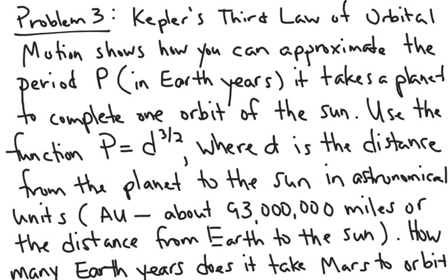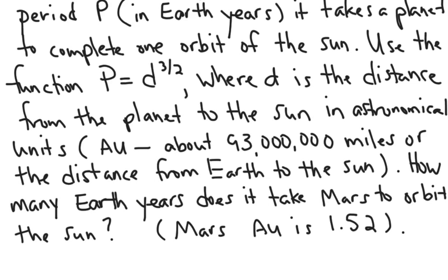Let's do a practical application of an equation that has a rational exponent in it. Kepler's third law of orbital motion shows how you can approximate the period p in Earth years. It takes a planet to complete one orbit of the Sun. Use the function p equals d raised to the 3 halves power, where d is the distance from the planet to the Sun in astronomical units. AU is the abbreviation for astronomical units, and it's equivalent to about 93 million miles, or the distance from Earth to the Sun. How many years does it take Mars to orbit the Sun, if the astronomical unit for Mars is 1.52?